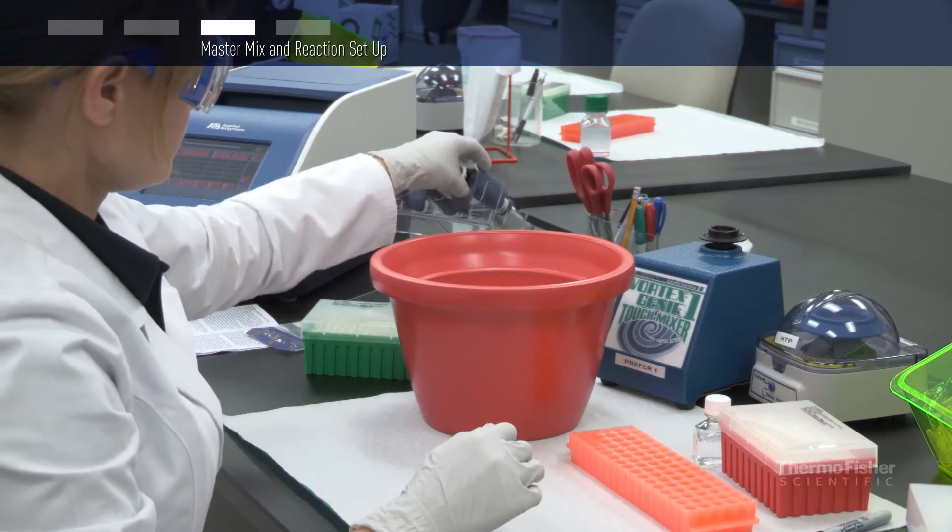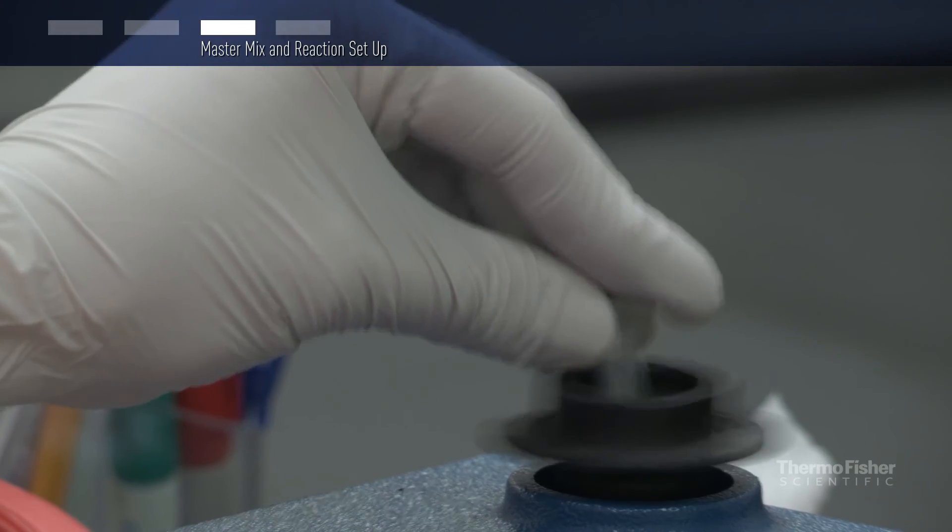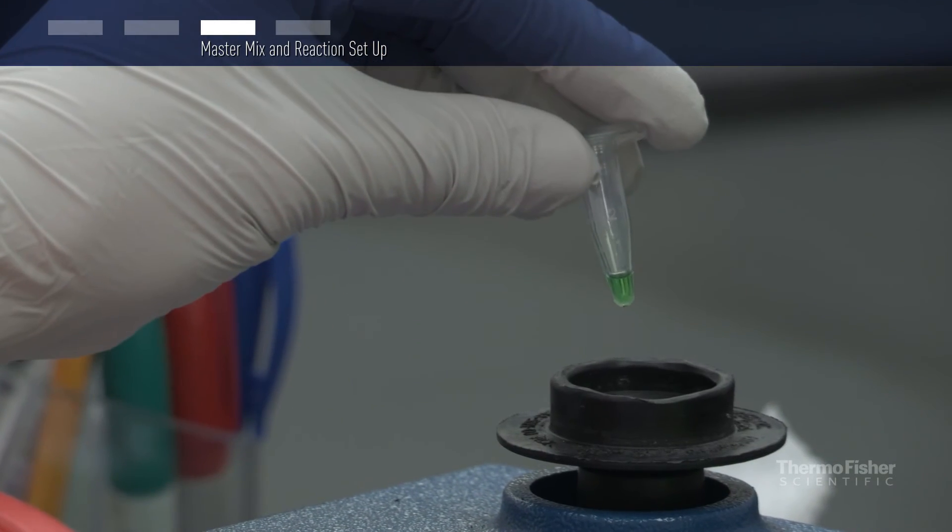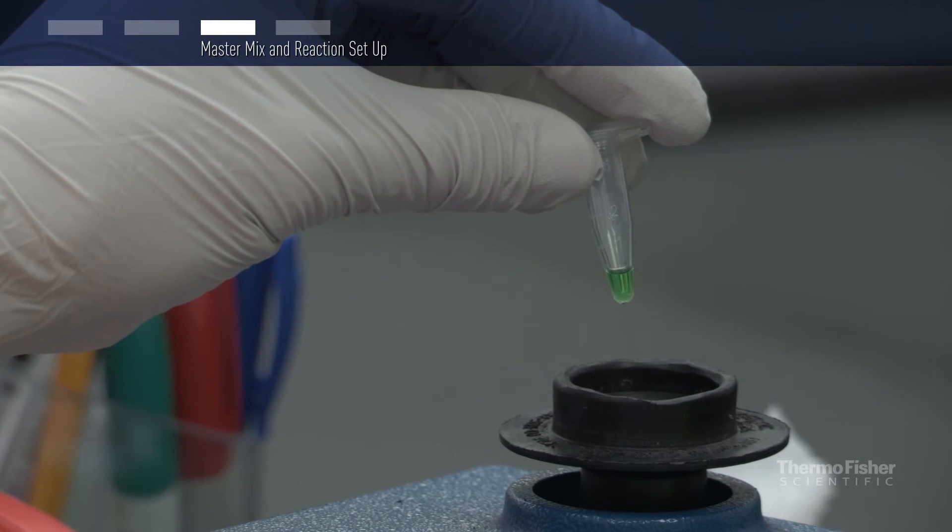Keep the reaction tube on ice to improve specificity. If a hot start version of the Fusion polymerase is used, then the reaction can be set up at room temperature.